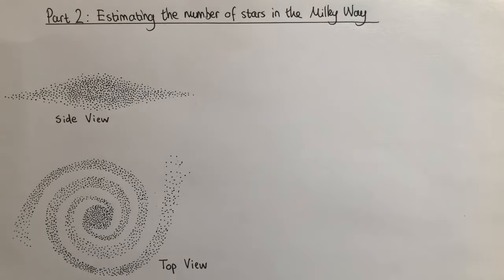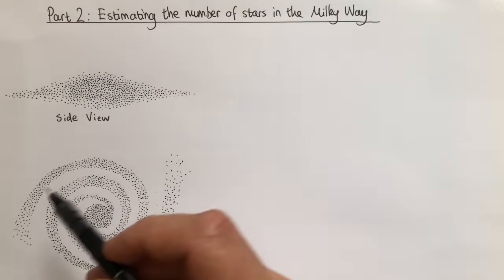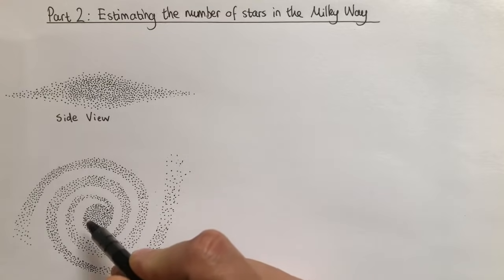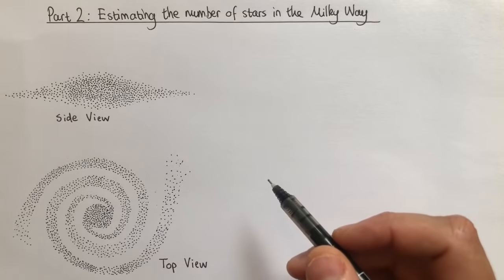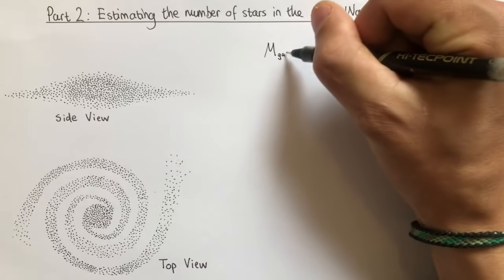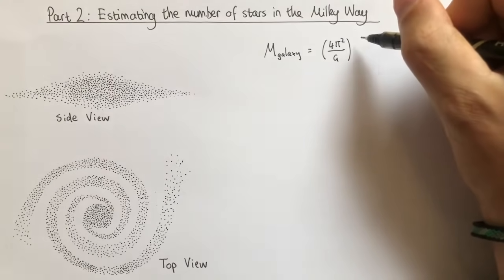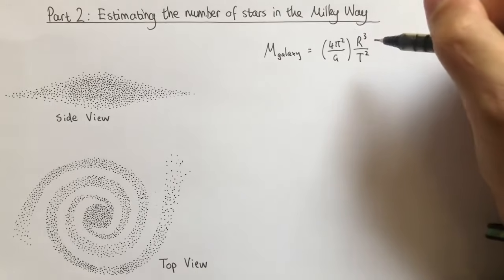In this second part we are going to estimate the number of stars in the Milky Way galaxy. In order to do this, we are going to assume that the vast majority of the mass of the Milky Way is concentrated in a uniform sphere at the centre of the galaxy. We're going to assume that most of the mass of this entire galaxy is concentrated in this sphere at the centre, and then we can use Kepler's third law to write down an expression for the mass of the galaxy: 4π² divided by G times R³ divided by T².